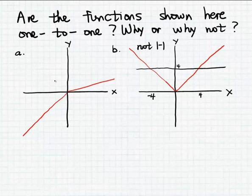But on the other hand, the horizontal line test indicates that this function graphed in example a is an example of a one-to-one function.